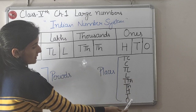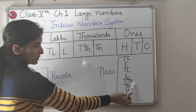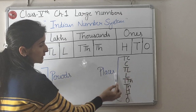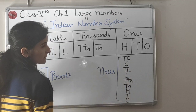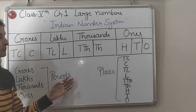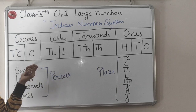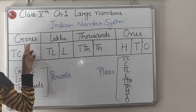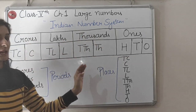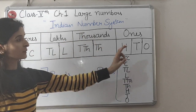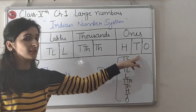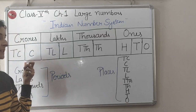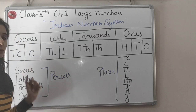And ones, tens, hundreds, thousands, ten thousands, lakhs, ten lakhs, crores, and ten crores — these all are places. So how many periods are there till nine places? There are four periods: ones, thousands, lakhs, crores. And we have to remember that the first period, ones, is divided into three places, and all other periods are divided into two places each.